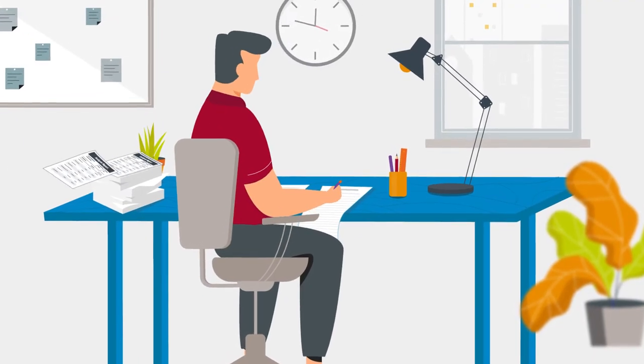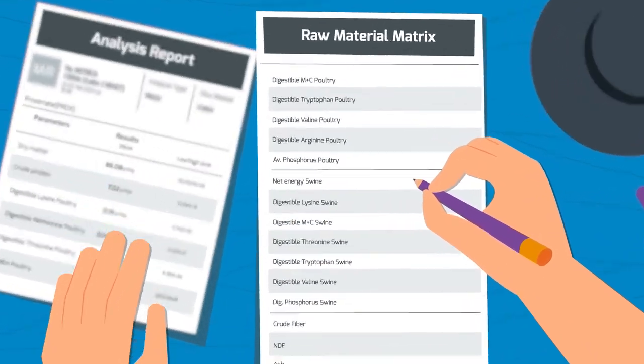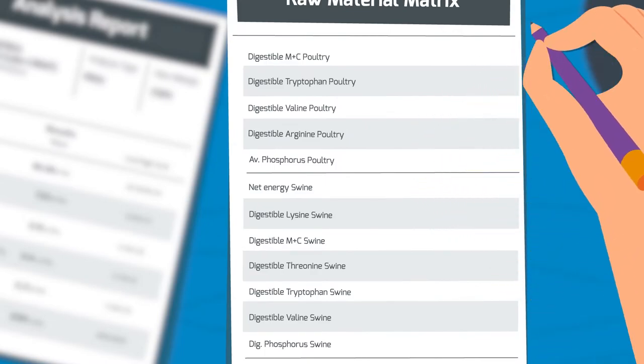Converting analytical results into nutritional values is a time-consuming and delicate process, which is often done manually, therefore leaving room for error.